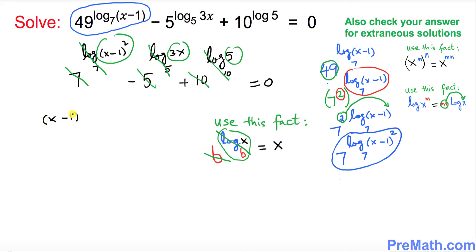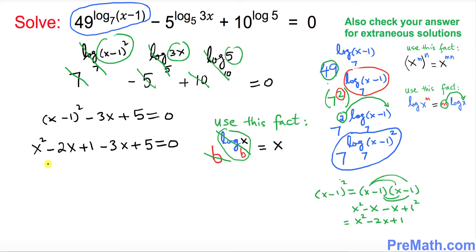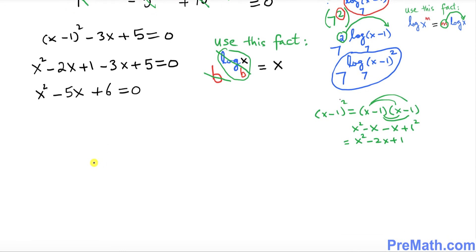We end up with (x minus 1)² minus 3x plus 5 equals 0. Expanding (x minus 1)² using FOIL gives x² minus 2x plus 1, and then minus 3x plus 5 equals 0. Combining like terms: x² minus 5x plus 6 equals 0, which is a quadratic equation.